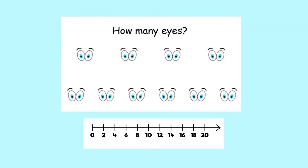How many eyes are there? Count in twos with me. Two, four, six, eight, ten, twelve, fourteen, sixteen, eighteen, twenty. Twenty eyes, or ten pairs of eyes.